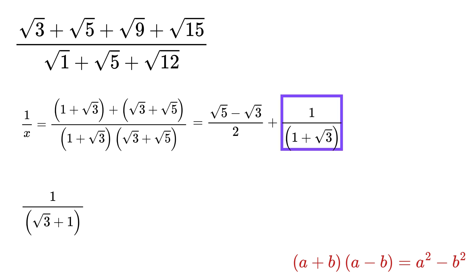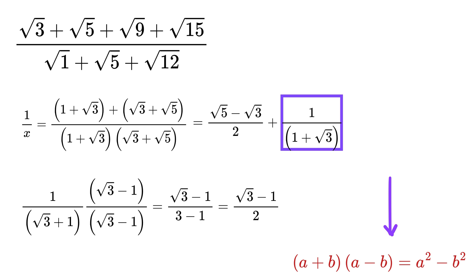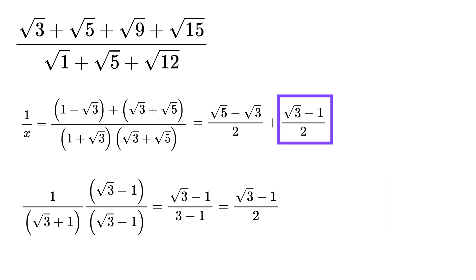Similarly, to rationalize 1 divided by 1 plus square root of 3, we multiply both numerator and denominator by square root of 3 minus 1. Again using the same identity, we get the denominator as 3 minus 1, or 2. So this simplifies to square root of 3 minus 1, divided by 2.